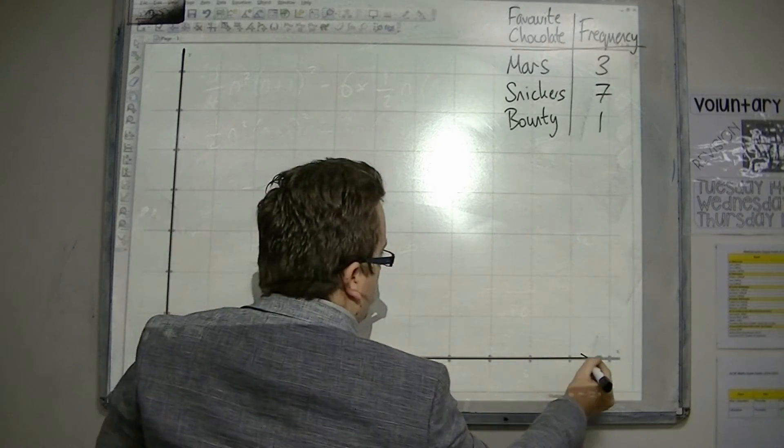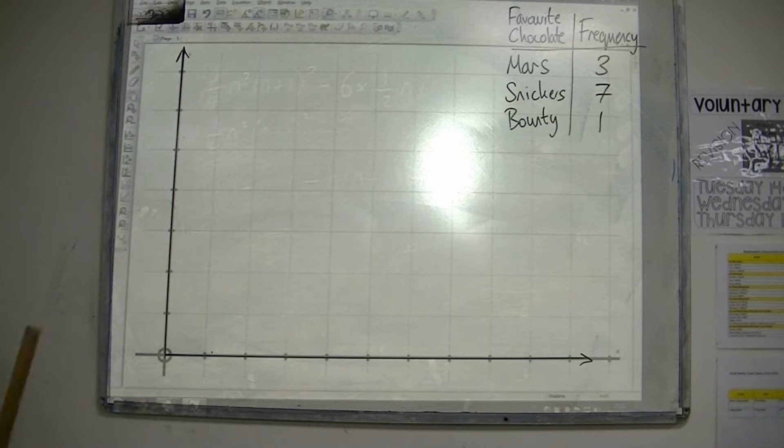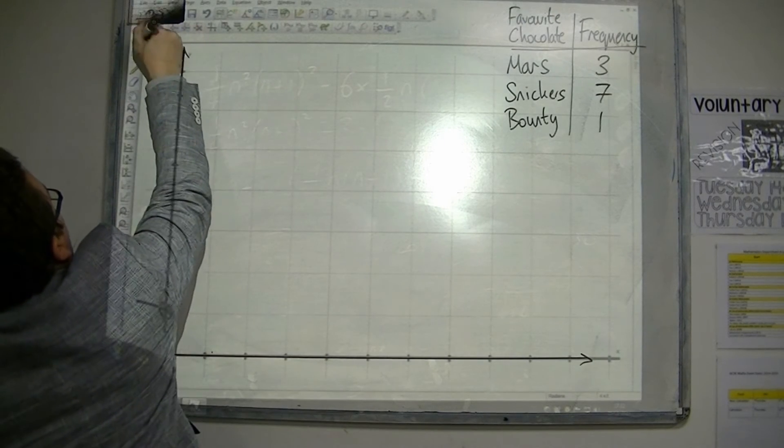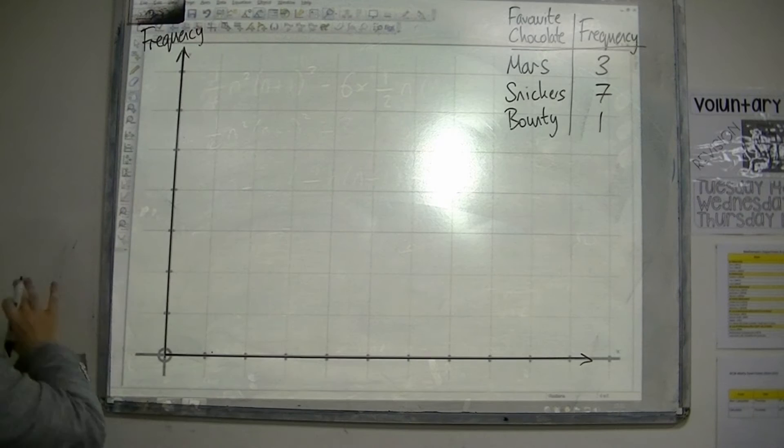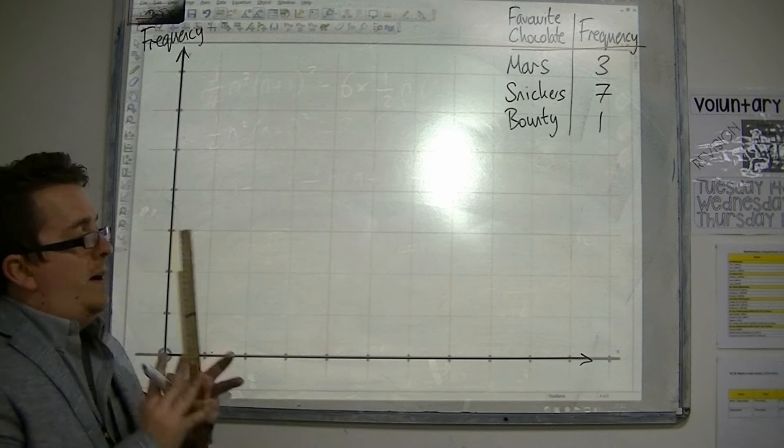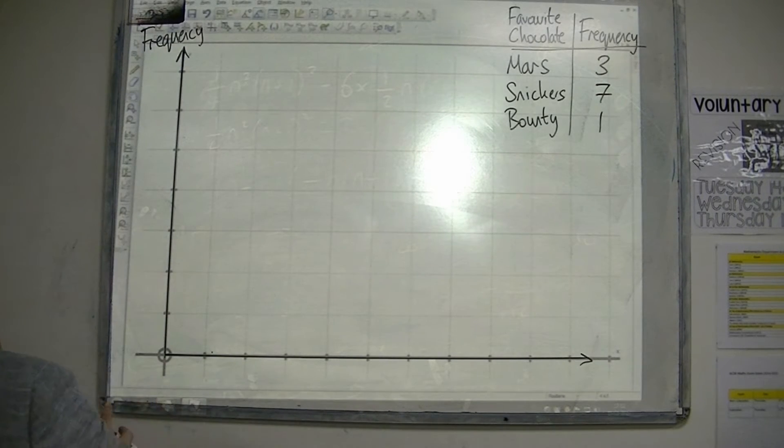I'm going to put some arrows on the ends. Now, I've got the vertical axis. The vertical axis is always going to be my frequency, unless I'm looking at bars going horizontally, of course. But I shouldn't have said always, but in the majority of cases, frequency is going up the left-hand side.